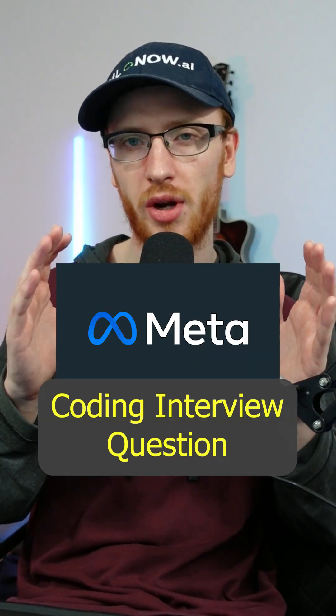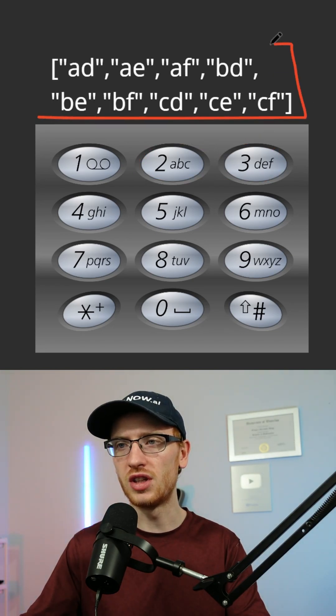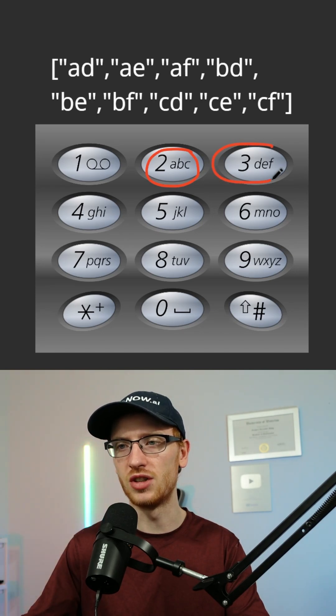Let's solve a meta-coding interview question. We're given as input a string, which is a sequence of digits that we pressed on a phone. We would want to return this list of strings, which is all of the possible words that could have been represented by our digits.